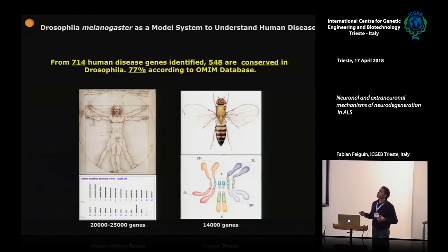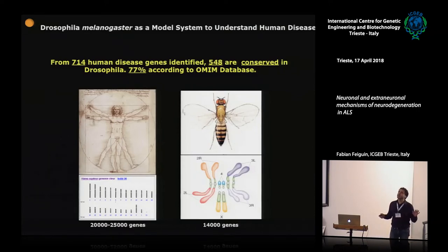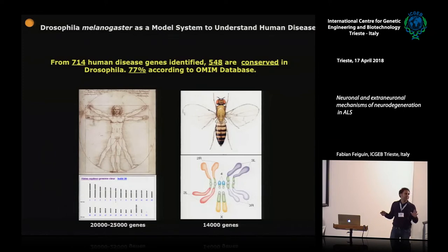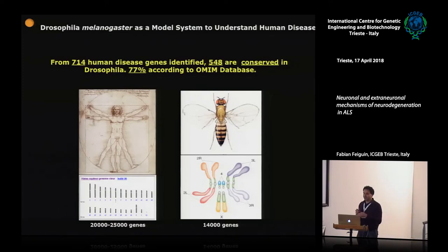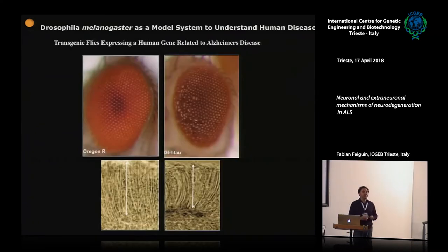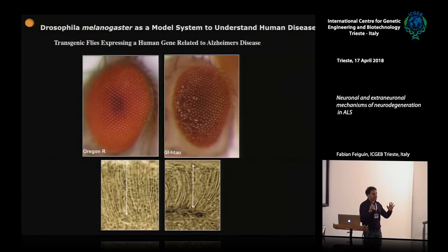An example is that from 700 human disease genes caused by single mutations, almost 70% are perfectly conserved in Drosophila. This is a huge conservation. So the question becomes: how do we use Drosophila to answer questions about human neurodegenerative disease? There are two main ways we can do this.